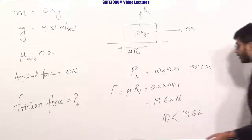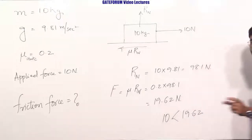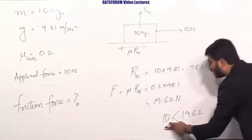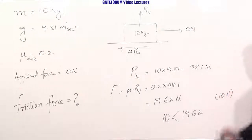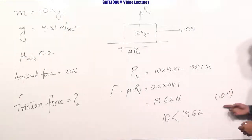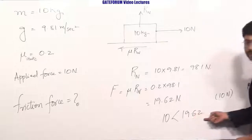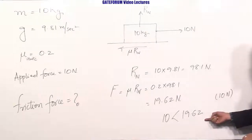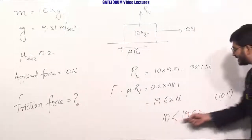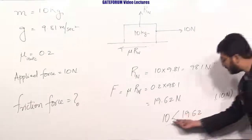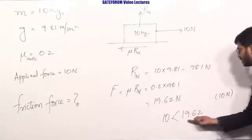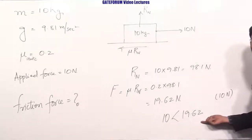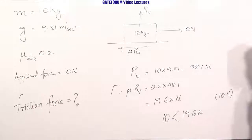So the friction force will not be the reactive force — it will be equal to the active force directly, which is 10 newtons. The answer is 10 newtons, not 19.62, because 10 is less than 19.62. You have to consider the active force as the friction force rather than the maximum static friction.